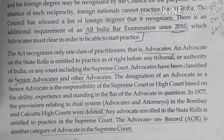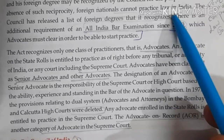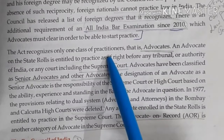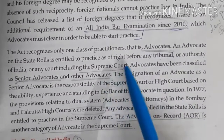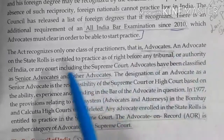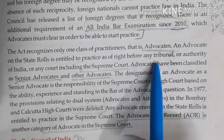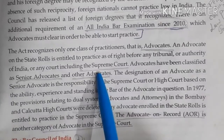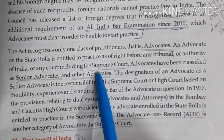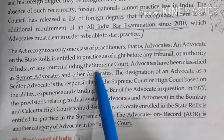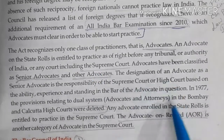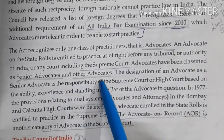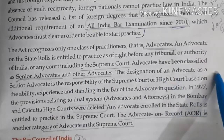These are the qualifications to become an advocate. The Act recognizes only one class of practitioners: Advocate. An advocate enrolled on the state rolls is entitled to practice as of right before any tribunal, authority, or court in India, including the Supreme Court. However, advocates are classified into two categories: Senior Advocate and Junior Advocate (or other advocate).